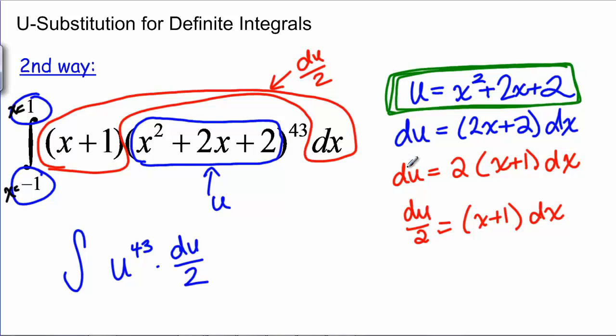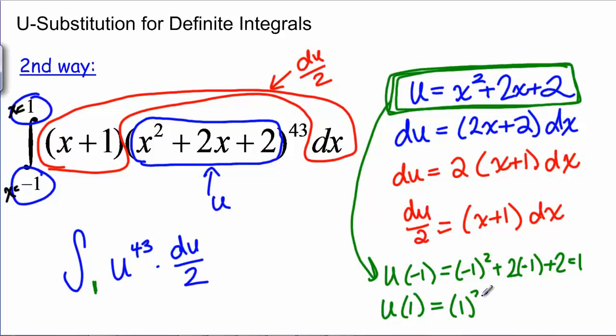Now here, U is actually a function of X. So I can plug in U of negative 1 and get negative 1 squared plus 2 times negative 1 plus 2, which is 1. My new bottom limit is 1. And I can do U of 1, which is 1 squared plus 2 times 1 plus 2, so that's 5. So my new top limit is 5. So what this means is when X is negative 1, U is 1, and when X is 1, U is 5.